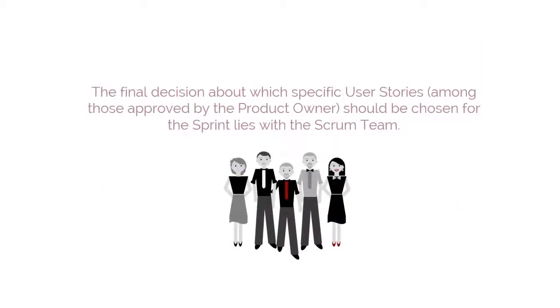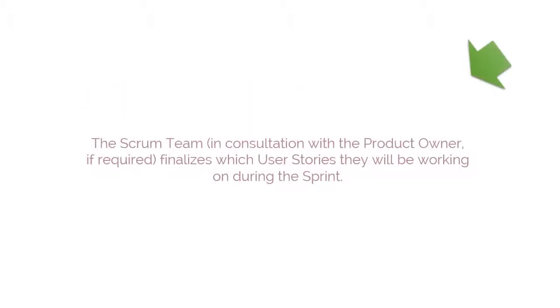Although the product owner approves the initial user stories for a sprint, the final decision about which specific user stories, among those approved by the product owner, should be chosen for the sprint lies with the scrum team. The scrum team, in consultation with the product owner if required, finalizes which user stories they will be working on during the sprint.